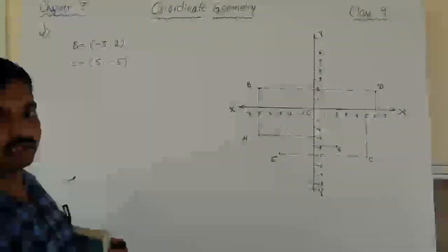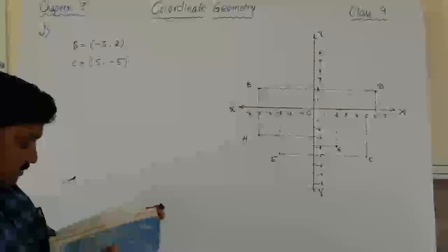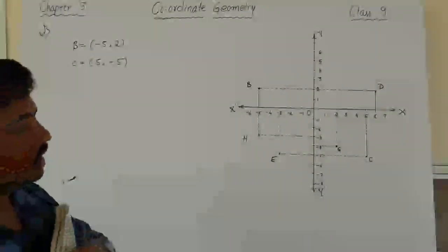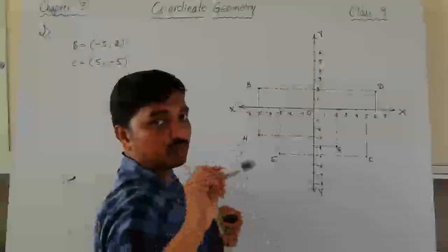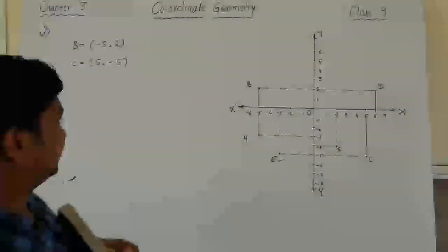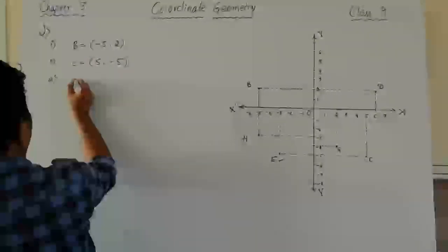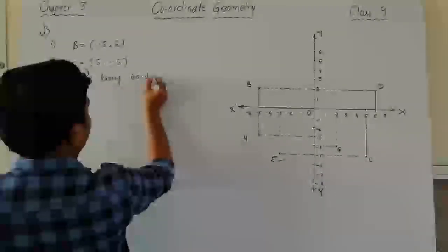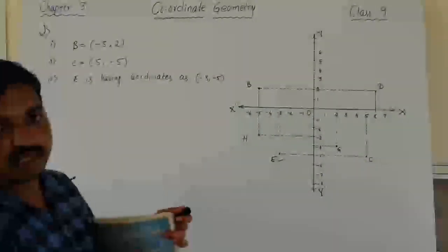With x positive and y negative, point C lies in the fourth quadrant. The third part asks to identify the point whose coordinates are minus 3 comma minus 5. Look at minus 3 on the x-axis and minus 5 on the y-axis — the point at that location is E. So E has coordinates minus 3 comma minus 5.